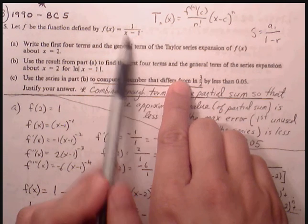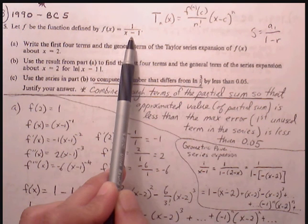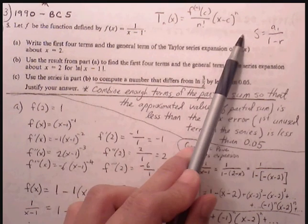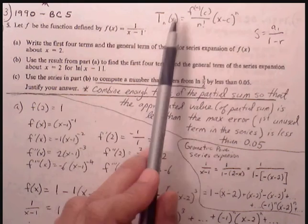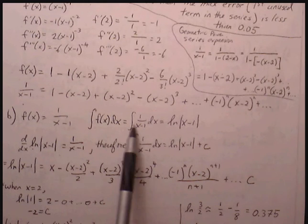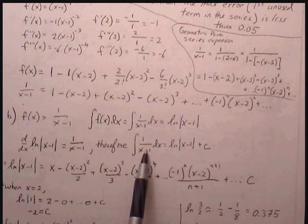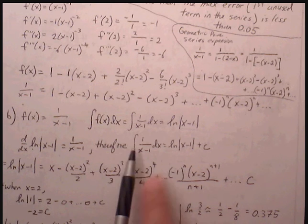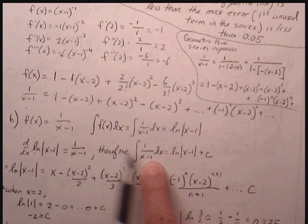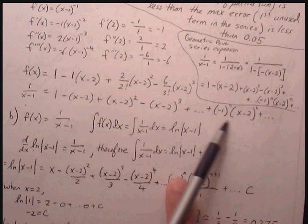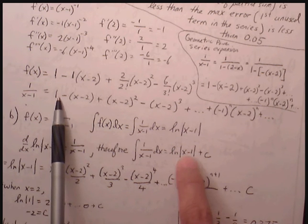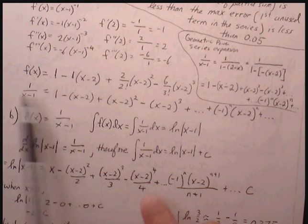We know the polynomial expansion for 1/(x-1) from Part A. The integral of 1/(x-1) equals ln|x-1| + C. So we have the polynomial expansion, and if we just find the indefinite integral of each of those terms, we can arrive at the polynomial expression for ln(x-1). Let's go through that.